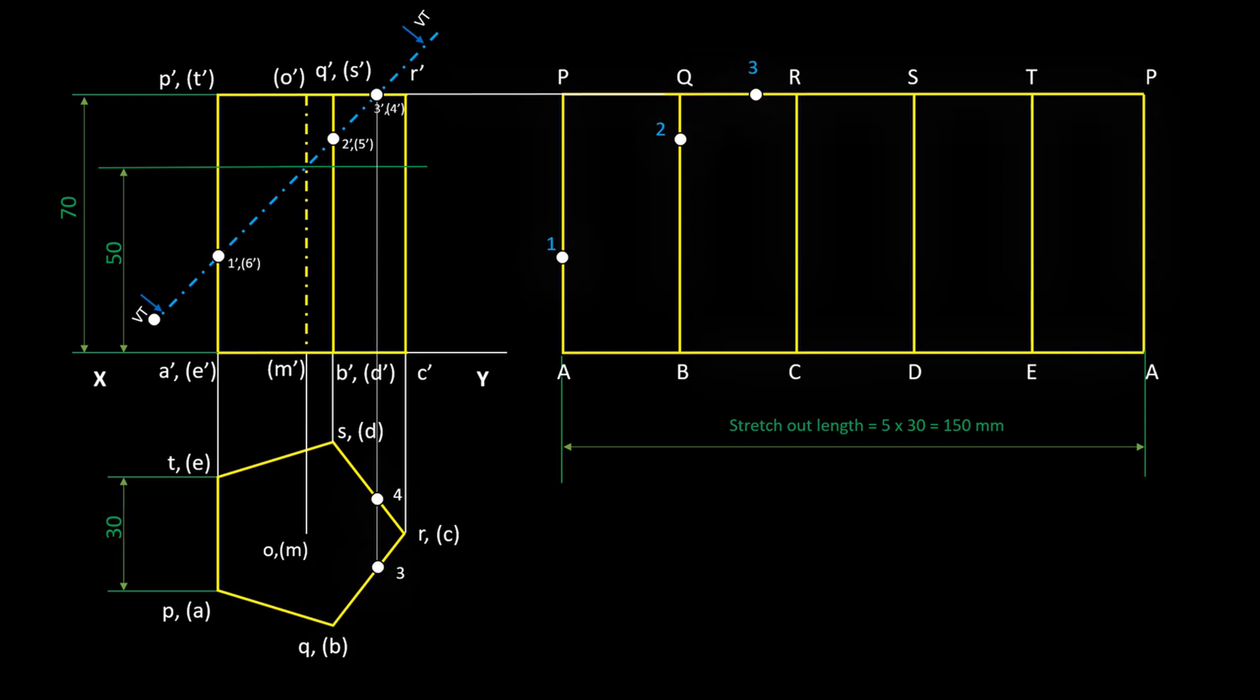Same as in the case of section point 4. Measure the true distance from R to 4 in top view. And mark on the pattern from point R.